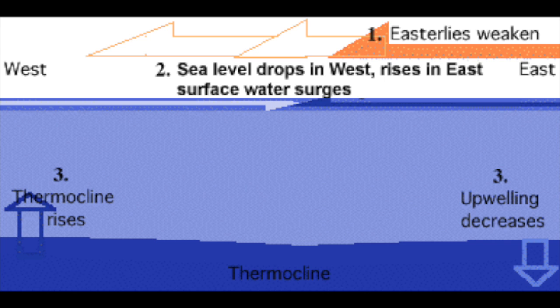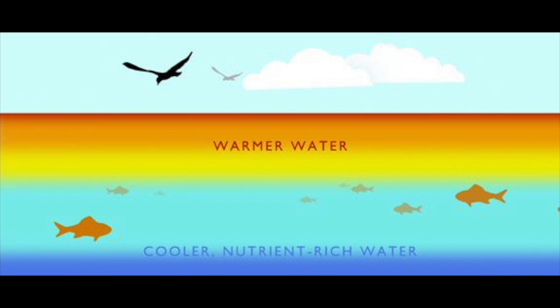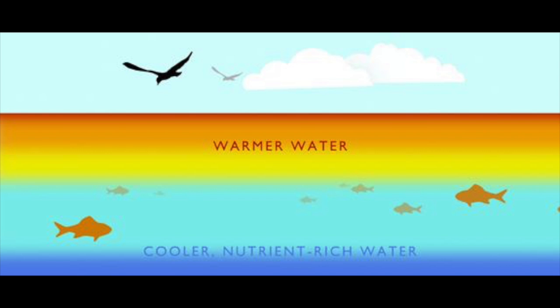During an El Niño, the trade winds weaken, causing warm waters to move east instead of west. Normal upwelling does not occur because of the thick layer of warm water. That lack of upwelling will not allow the euphotic zone to support the usual ecosystem, which impacts fishing and the Ecuadorian economy.